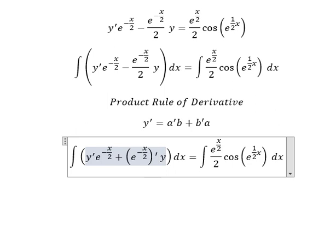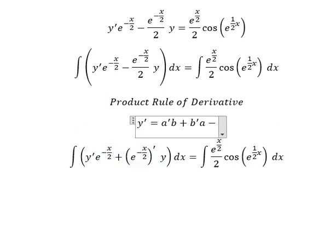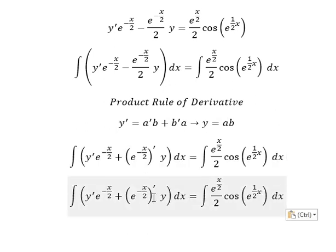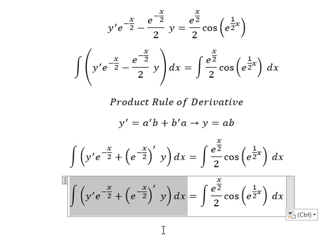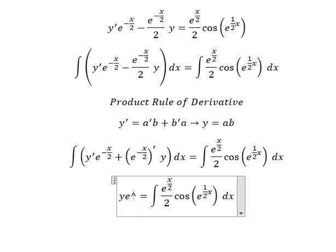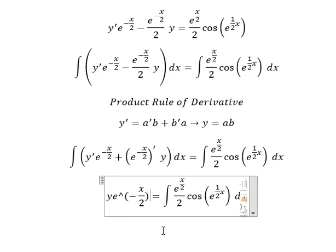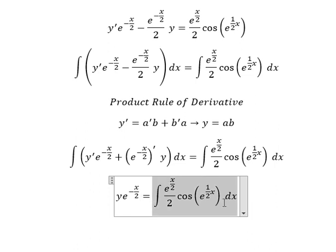So the integration of this one gives us y equals a times b times e. So the integration of that gives us y equals e to the power of negative s over two.